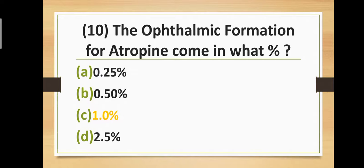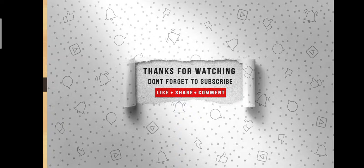Question number ten: The ophthalmic formulation for atropine comes in what percentage? Option A: 0.25%. Option B: 0.50%. Option C: 1%. Option D: 2.5%. Correct answer is Option C — One percent. The ophthalmic preparation for atropine comes in 1%.